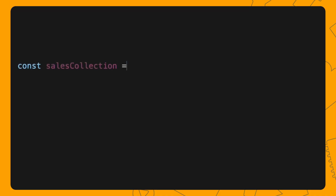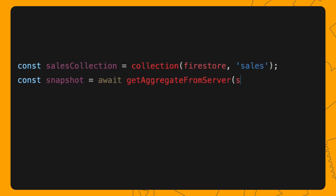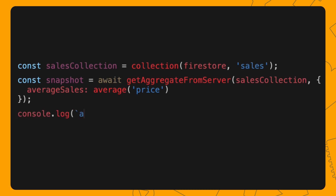Now that you know the total sales, let's see how you can get an average of the sales. This information can be very valuable in helping you understand how much, on average, users are willing to spend on each purchase. Once again, the first thing you need to do is grab the collection, then call getAggregateFromServer. You need to specify the aggregation query you want to run, so this is where it starts to get different. This time, you need to call average. Next, pass the field name as a parameter and assign the result to a variable, for example, averageSales. Once the snapshot is ready, you can run snapshot.data and access the average of the sales made in your app through the averageSales variable.